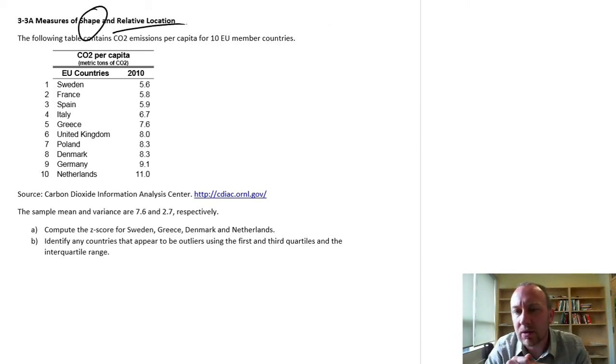Relative location allows us to identify where a specific observation exists in a distribution relative to its mean. We've already talked about the mean as being that measure of central location, the measure of central tendency within a data set. Now we want to measure the position of individual observations relative to that mean. Specifically, we're going to measure it in terms of the number of standard deviations from the mean.